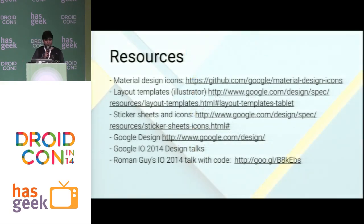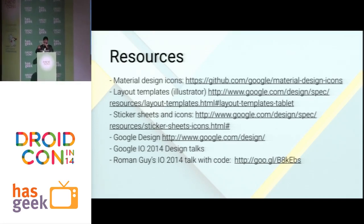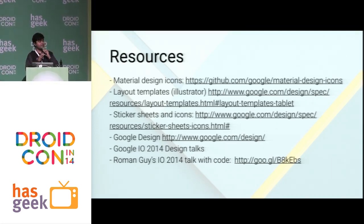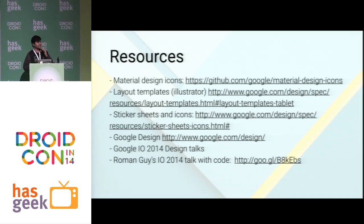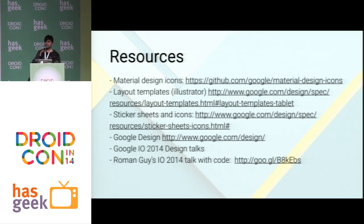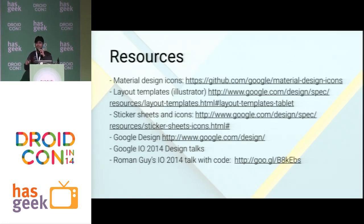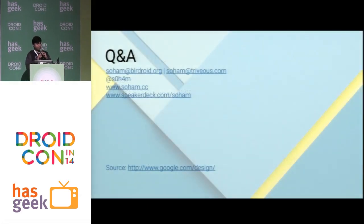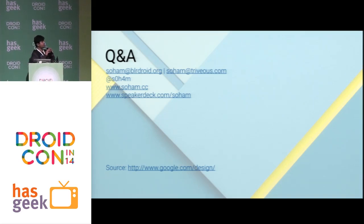That's it for the presentation. Lots of resources available to better understand what's good for your application — design icons, templates, sticker sheets, and icons are available on the Google Design site in Illustrator, Photoshop, and Sketch formats. I'd highly recommend the Google I/O 2014 design sessions — about six or seven sessions — especially Roman Gies and Chet Haas's talk, which has a nice video with actual implementations. Source code is also on GitHub. Slides are available at speakerdeck.com/s0h4m.